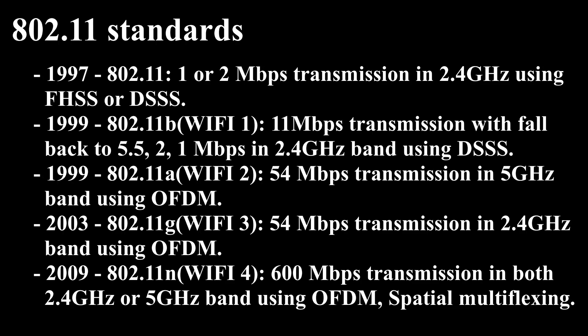Welcome. Today's topic for discussion is 802.11 standards. There are several specifications in the 802.11 family. Let us discuss them in the order of evolution or adoption. 802.11, year 1997, provides one or two Mbps transmission in the 2.4 GHz band using either frequency hopping spread spectrum (FHSS) or direct sequence spread spectrum (DSSS).